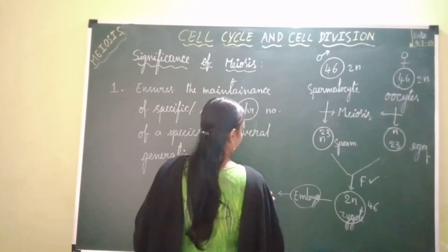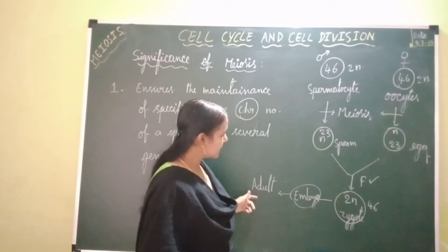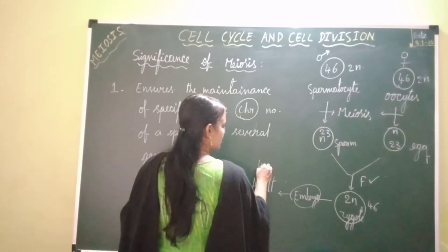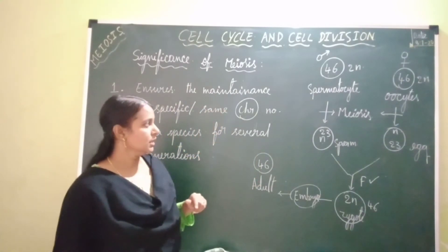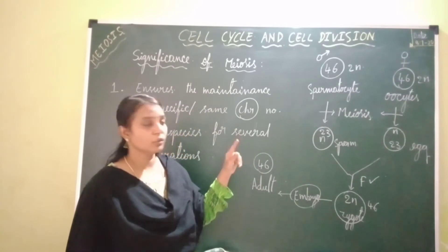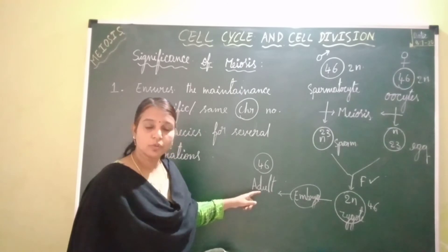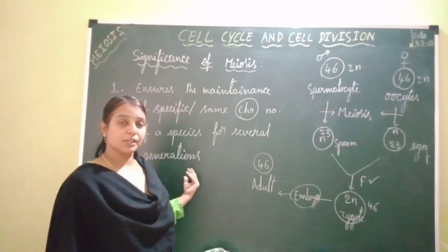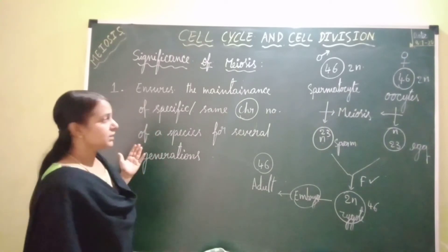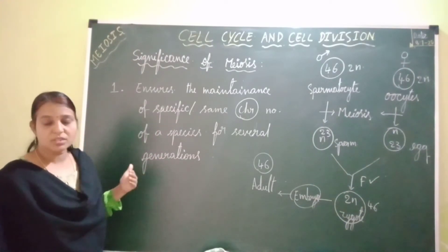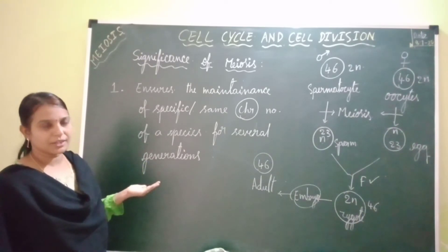All the cells of the human adult consist of 46 chromosomes each. So in the parents also there are 46 chromosomes, in this offspring also 46 chromosomes will be there, and in the next generation also the number of chromosomes will be 46. This is how meiosis ensures the maintenance of the specific chromosomal number of a species for several generations.